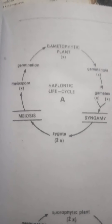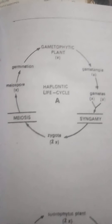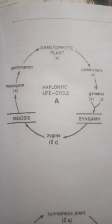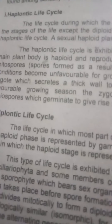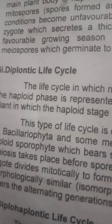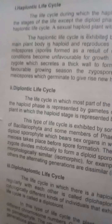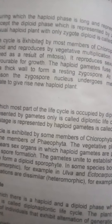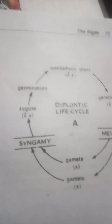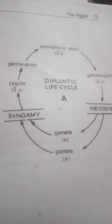This is the haplontic life cycle, which consists of only haploid algae. In contrast, there is also a diploid algae life cycle. Some members of Bacillariophyta, Phaeophyta (brown algae), diatoms, and Chlorophyta (green algae) follow this life cycle.